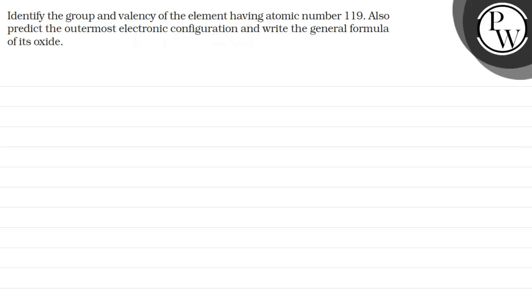Hello, let's read the question. The question says, identify the group and valency of the element having atomic number 119, also predict the outermost electronic configuration and write the general formula of its oxide.